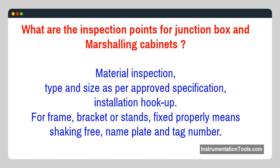What are the inspection points for junction boxes and marshalling cabinets? Material inspection — type and size as per approved specification — installation hookup. For frame, bracket, or stands: fixed properly (shaking-free), name plate, and tag number.